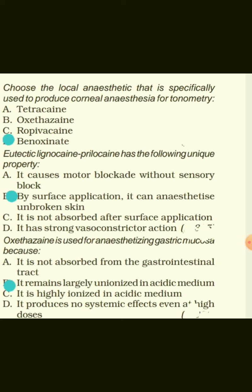The local anesthetic specifically used to produce corneal anesthesia for tonometry is benoxinate. Eutectic lignocaine-prilocaine (EMLA) has the unique property that by surface application it can anesthetize unbroken skin. Oxybuprocaine is used for anesthetizing gastric mucosa because it remains largely unionized in acidic medium.